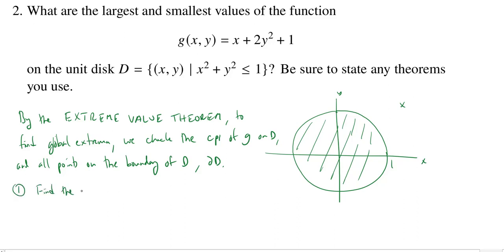So step one, we need to find the critical points. So find the critical points of g and doing that is going to require us to compute the gradient and set it equal to zero. So the gradient here will just be the partial g with respect to x comma the partial g with respect to y. So gx is going to be 1 and gy will be 4y. In order for the zero vector to equal 1 comma anything, you would need for zero to equal 1. So as zero does not equal 1, there are no critical points.